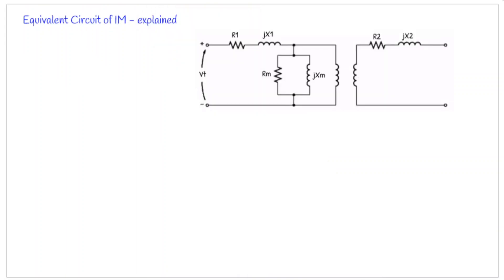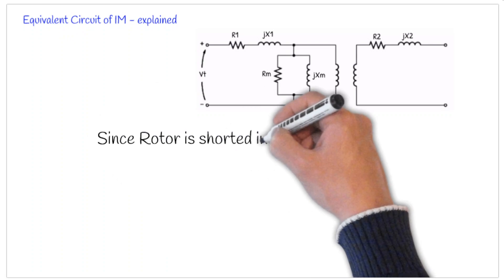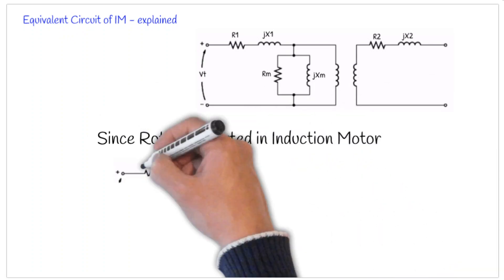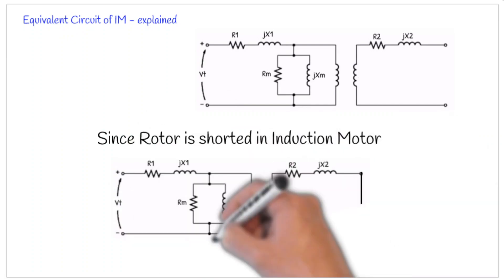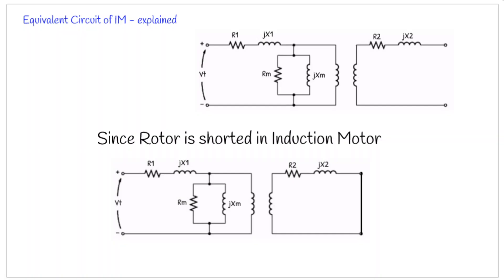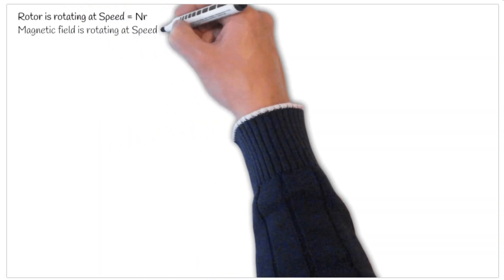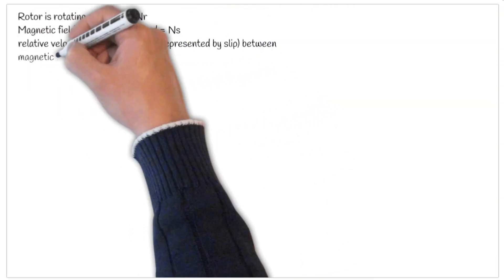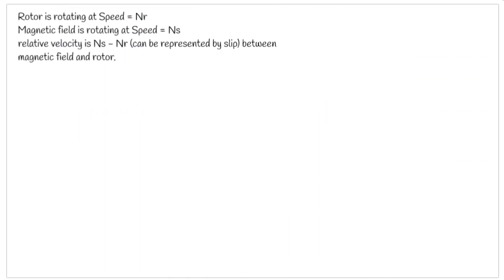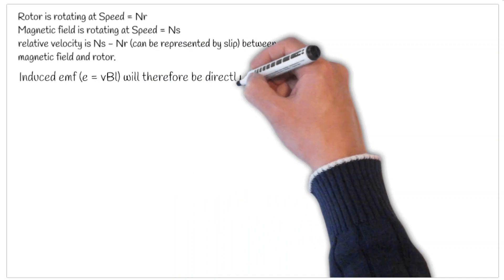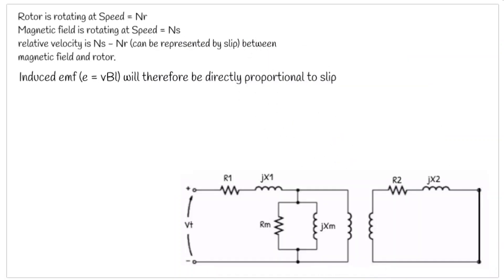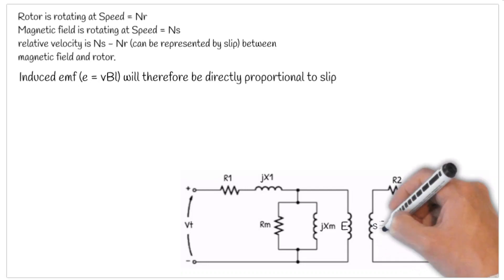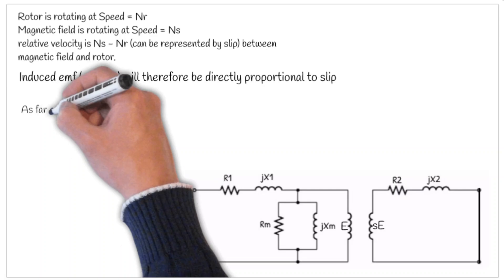The equivalent circuit of the induction motor needs to be derived stepwise. Starting from the equivalent circuit of the transformer, the first step is to short the rotor circuitry. Next, let's see what happens because of the slip. The rotor is rotating at a speed of Nr and the magnetic field is rotating at the synchronous speed, so the relative velocity between the two is Ns minus Nr. Therefore, the induced EMF will be proportional to the slip. If E is the voltage on the primary side, S times E will be the voltage on the secondary side of the induction motor.